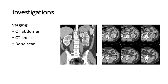Investigations for staging the disease include CT of the abdomen to look for perinephric invasion, adjacent organ invasion, extension into the renal vein or inferior vena cava, liver metastases, or enlarged lymph nodes. CT of the chest is done for lung metastasis, and a bone scan is done especially in patients with abnormal ALP levels or bone-related complaints in the presence of a renal mass.